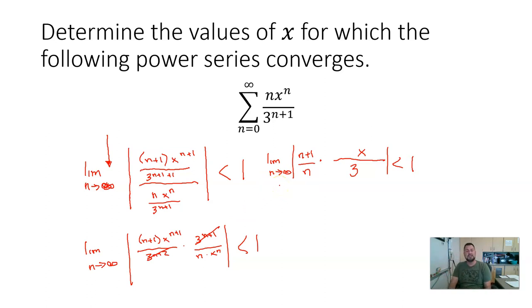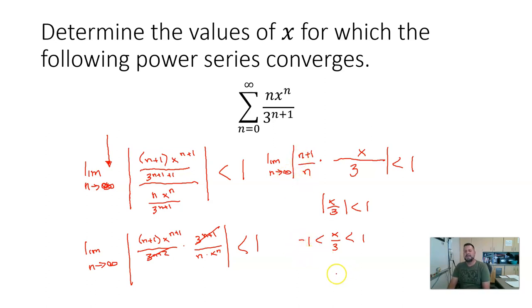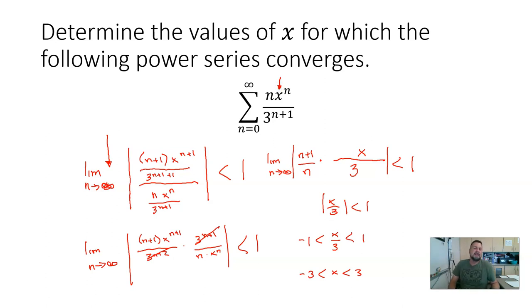Instead, realize what happens as n approaches infinity: (n+1)/n approaches 1, so those cancel, and this just becomes the absolute value of x divided by 3 is less than one. Multiplying both sides by 3 gives the absolute value of x is less than 3, so x is between negative 3 and positive 3. Any number I put in between negative three and positive three for x will give a convergent series — that is our interval of convergence.